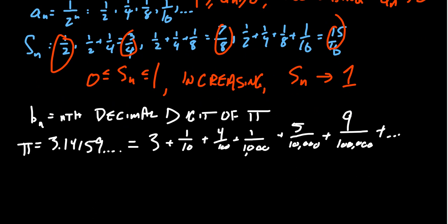But if we recognize the pattern that's in play here, we can rewrite this thing as 3 plus the sum of, as we allow i to go from 1 to infinity, of our sequence b_n over 10 to the i power.